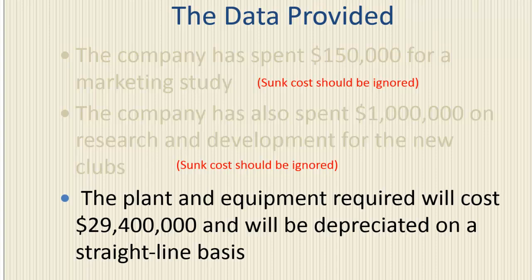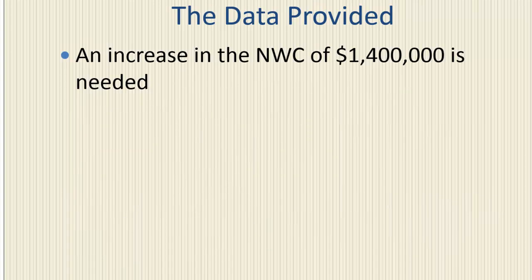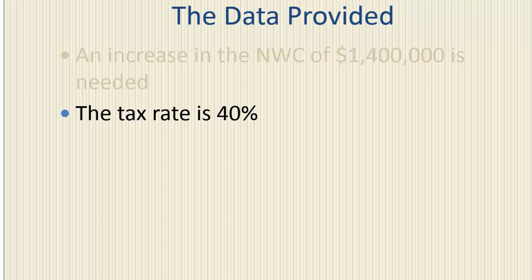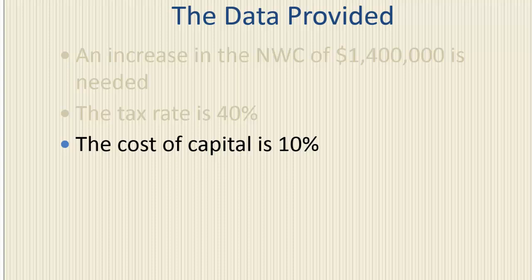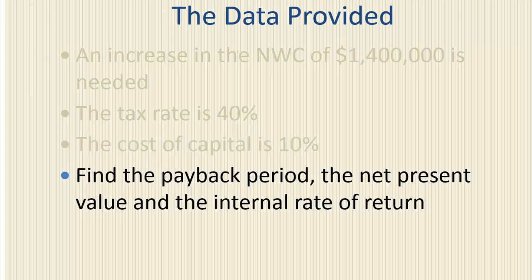The plant and equipment required for manufacturing will cost $29,400,000 and will be depreciated on a straight-line basis. An increase in net working capital of $1,400,000 is needed initially when the project is launched. The tax rate is 40% and the cost of capital for this project is 10%. We need to find the payback period, the net present value, and the internal rate of return.